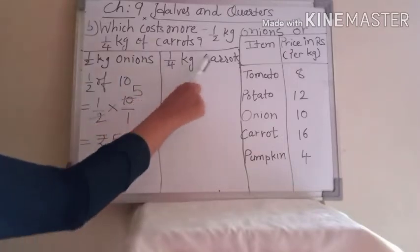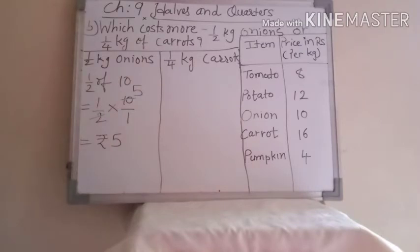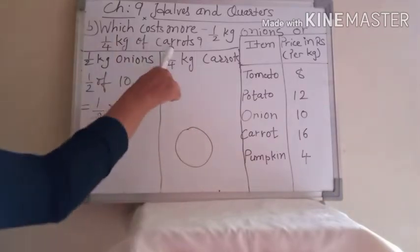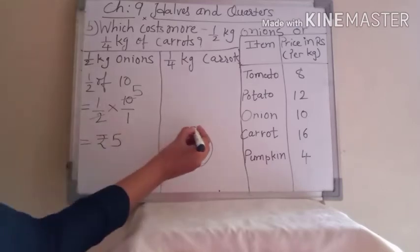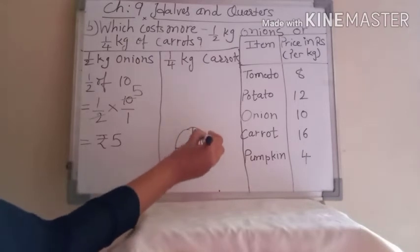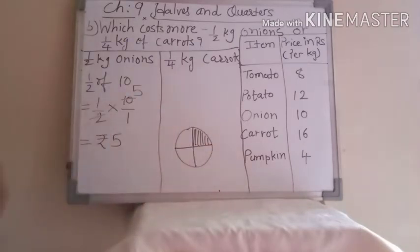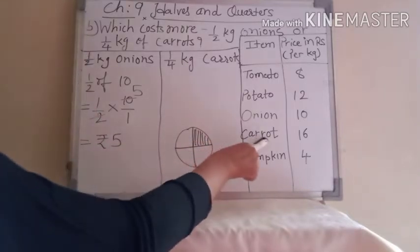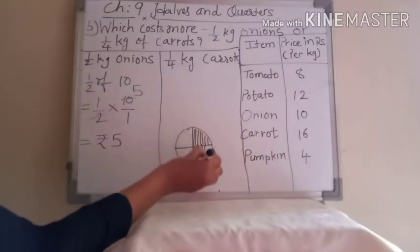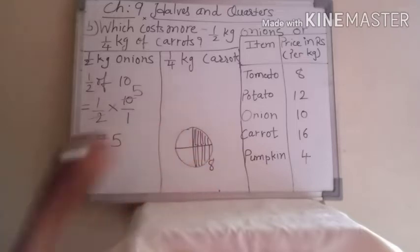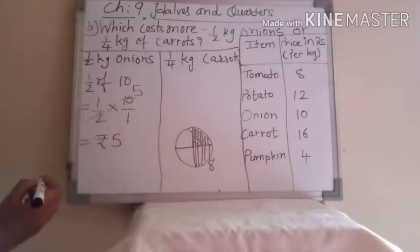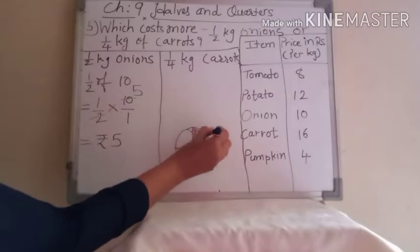Now we find the price of 1/4 kg carrots. One fourth means you have to make 4 equal parts — this one portion is called 1/4. The price of carrot per kg is 16 rupees. So half kg will be 8 — 16 ka half is 8. But we have to find the price of 1/4, that means half of the half price. Half of 8 is 4, so the price of 1/4 kg carrot is rupees 4.